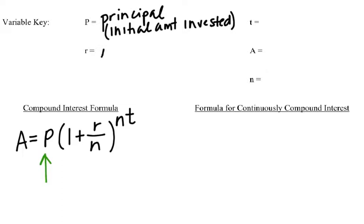Now R is our interest rate, however, it's always going to be the interest rate written as a decimal.